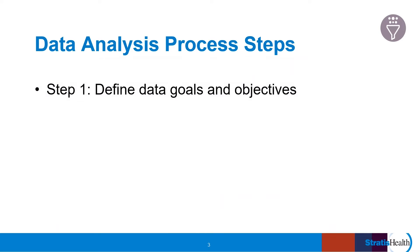Step one: define data goals and objectives. First, we must define what we are trying to understand or achieve with the data. For example, do you want to understand what is happening with a process or an outcome? This requires input from all people involved in the quality improvement project and may need to be revisited and revised throughout the analysis process. Often, data goals are too broad or ambitious and must be narrowed down or broken into multiple sections.